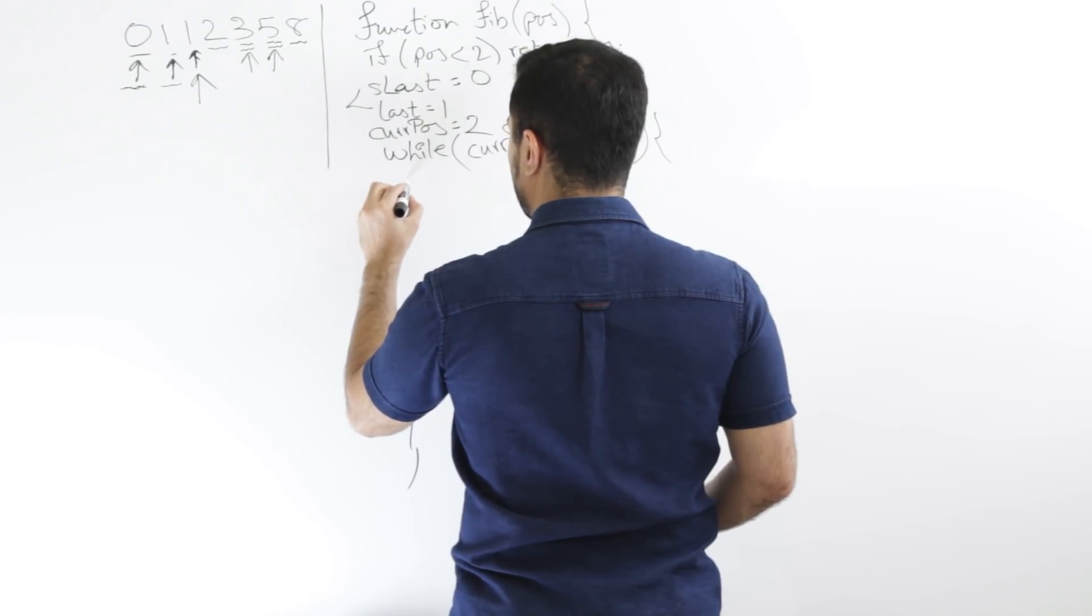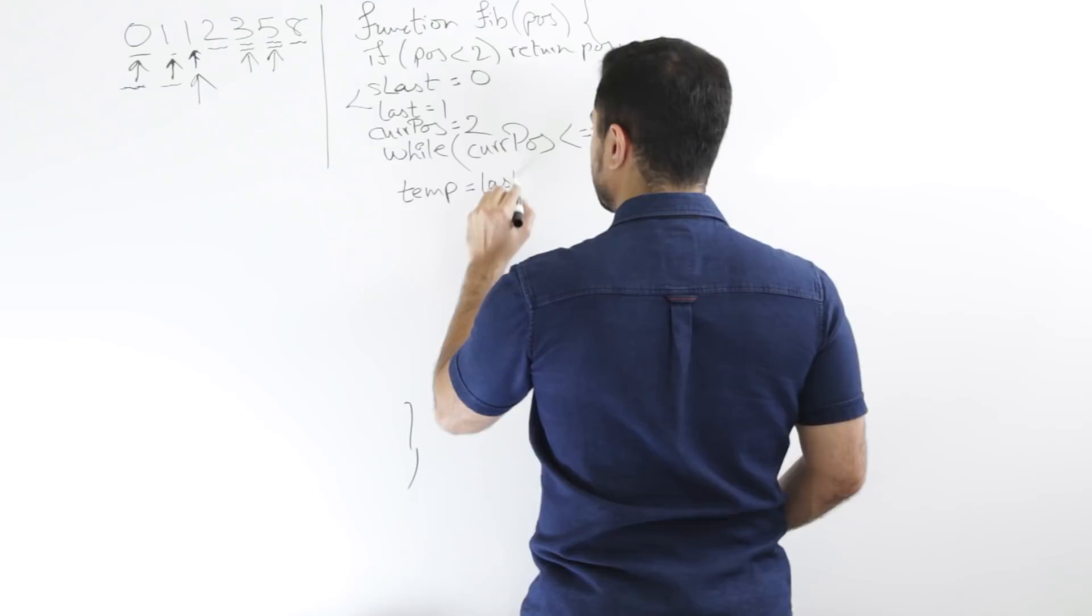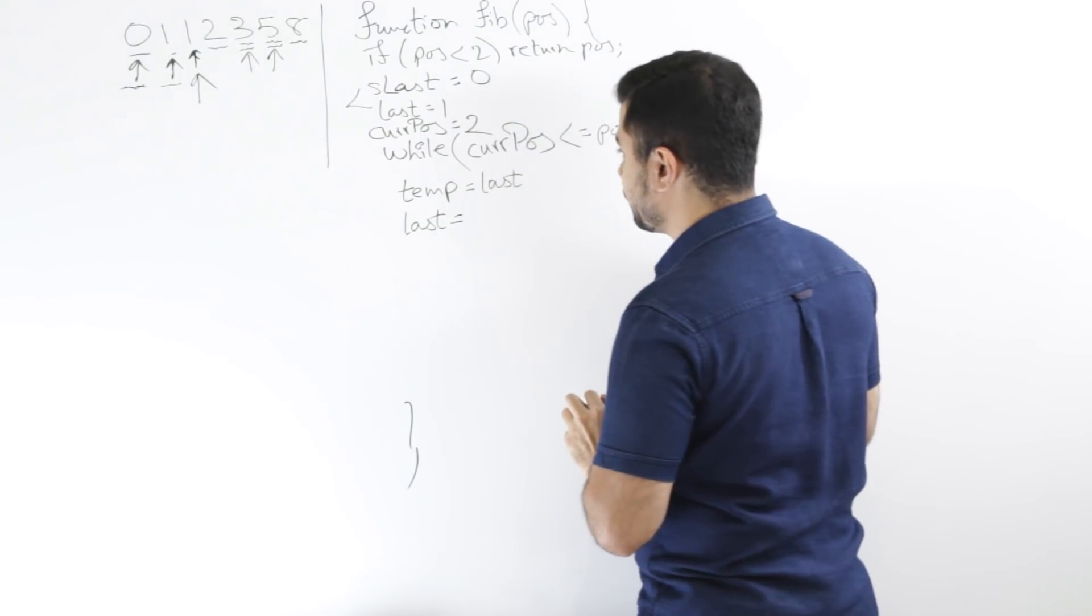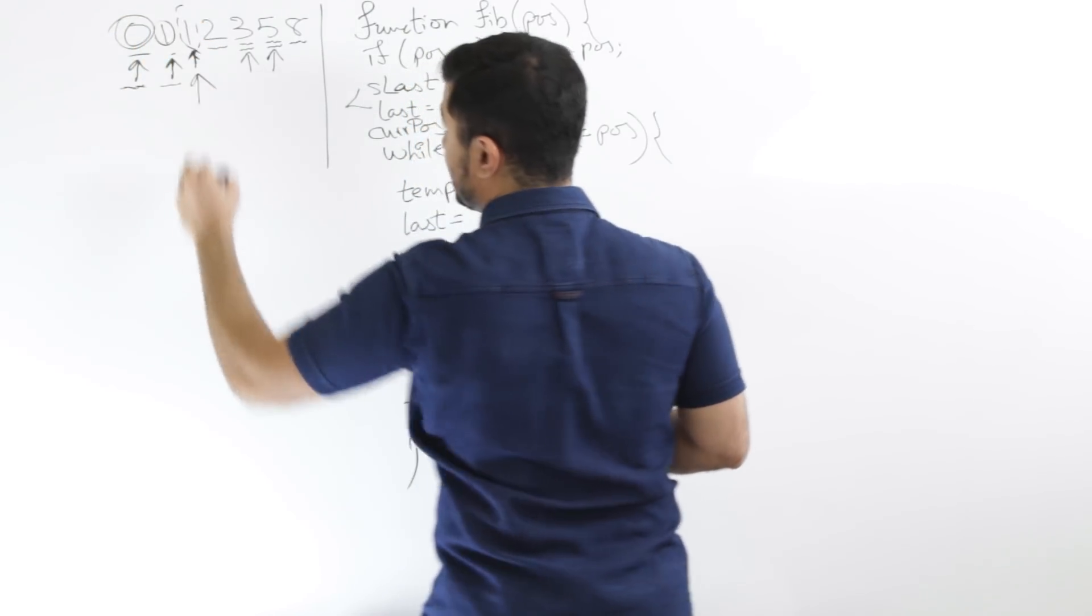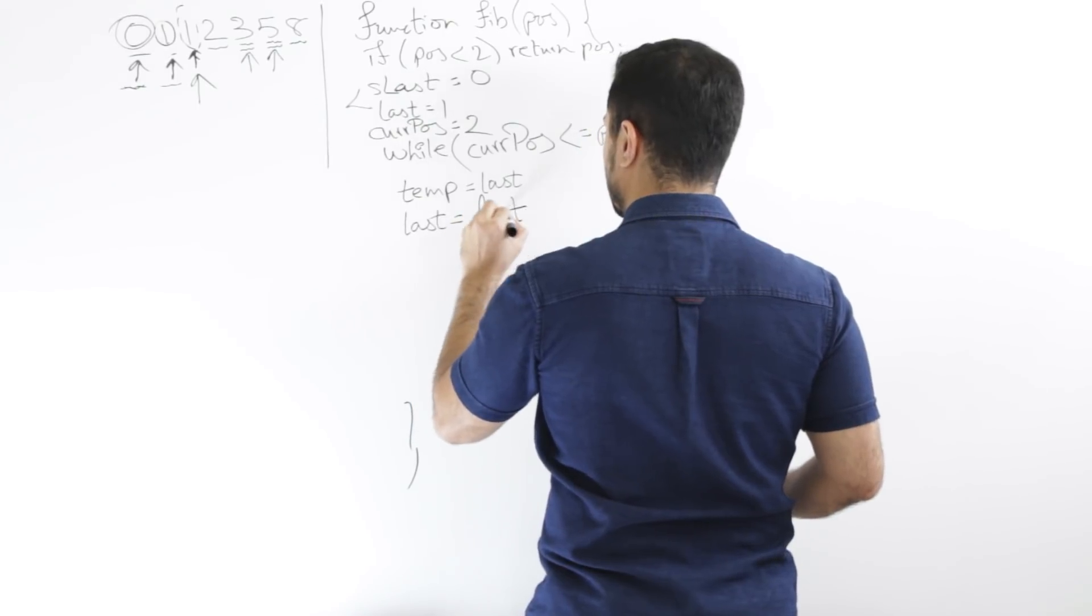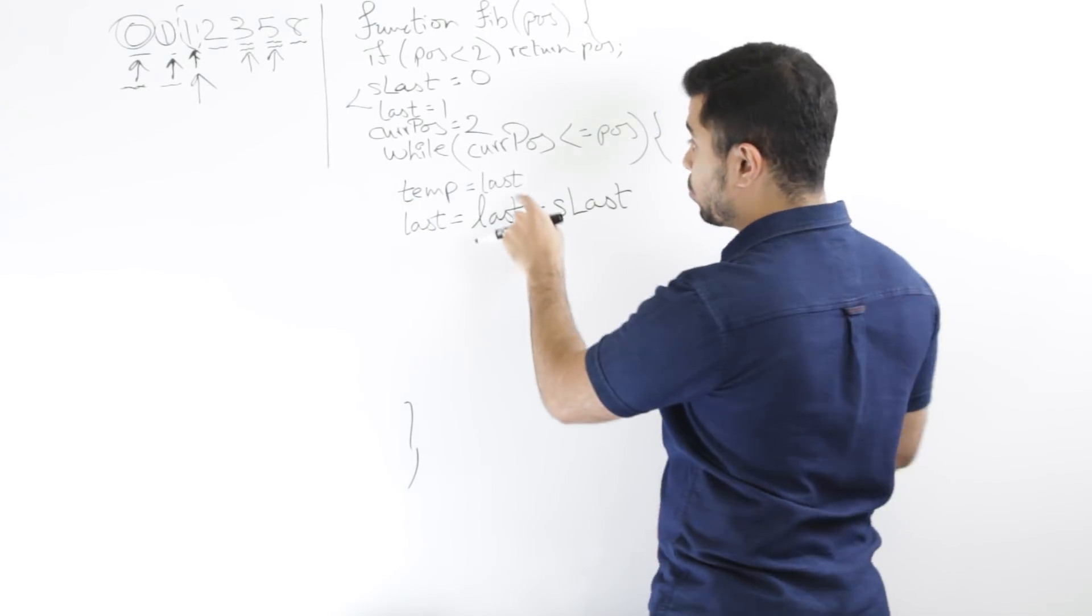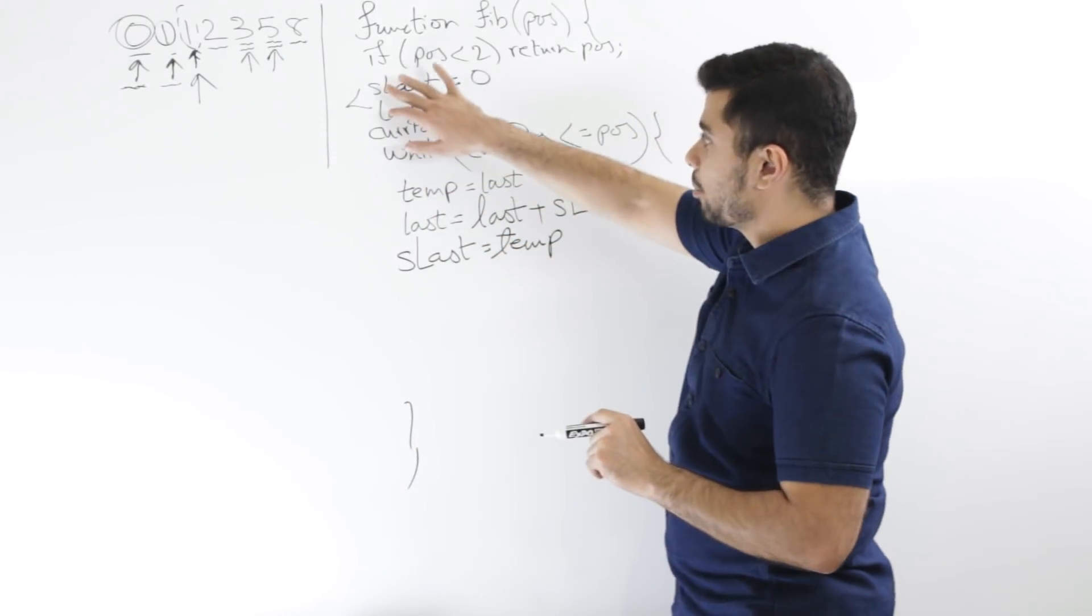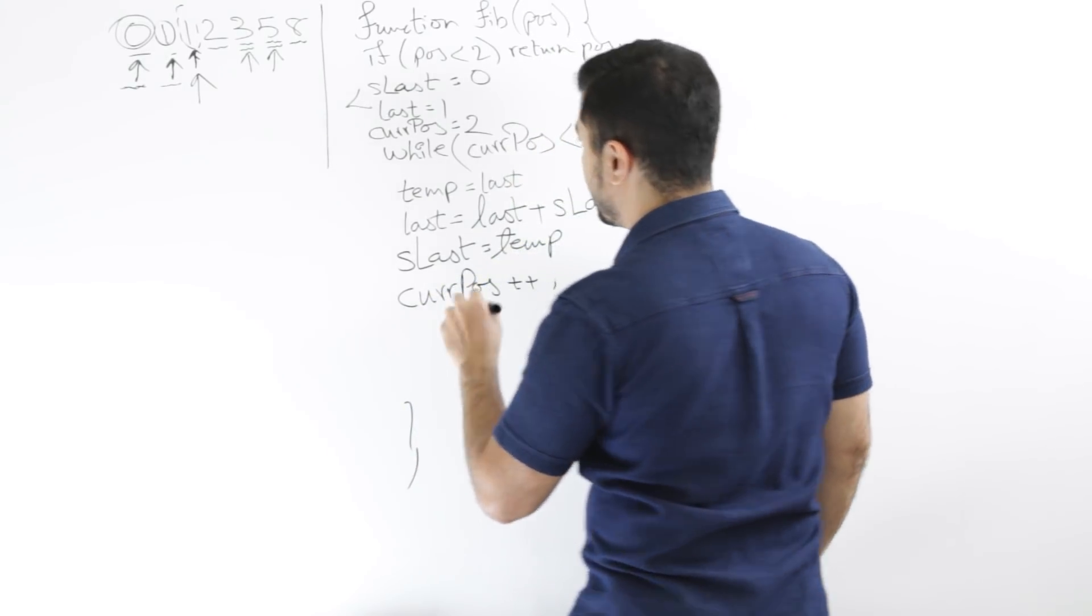So let's say I'm storing my last value in a temp variable. So I'll say last, right? So now I can update my last value to my current value. So for example, if last was this and my second last was this, first of all, I will need a current value. So my current value right now will be the last value for the next iteration, right? So this last value will basically be last plus second last, right? Now, my second last value is whatever was last before. So I'll say slast equals temp, yeah? So now I just updated the second last and last values and now I'll say cur position plus plus and I'll let the while loop run.